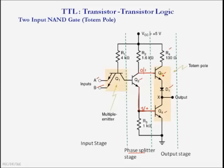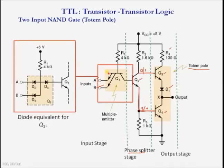Q3 is arranged on top of Q4, and this arrangement is called the totem pole arrangement. Diode D1 ensures either Q3 or Q4 is in the on state. The output is collected from the collector terminal of Q4. We can draw the diode equivalent for the multi-emitter NPN transistor Q1: inputs A and B connect through base-emitter junction diodes D2 and D3, and D4 is the base-collector junction.